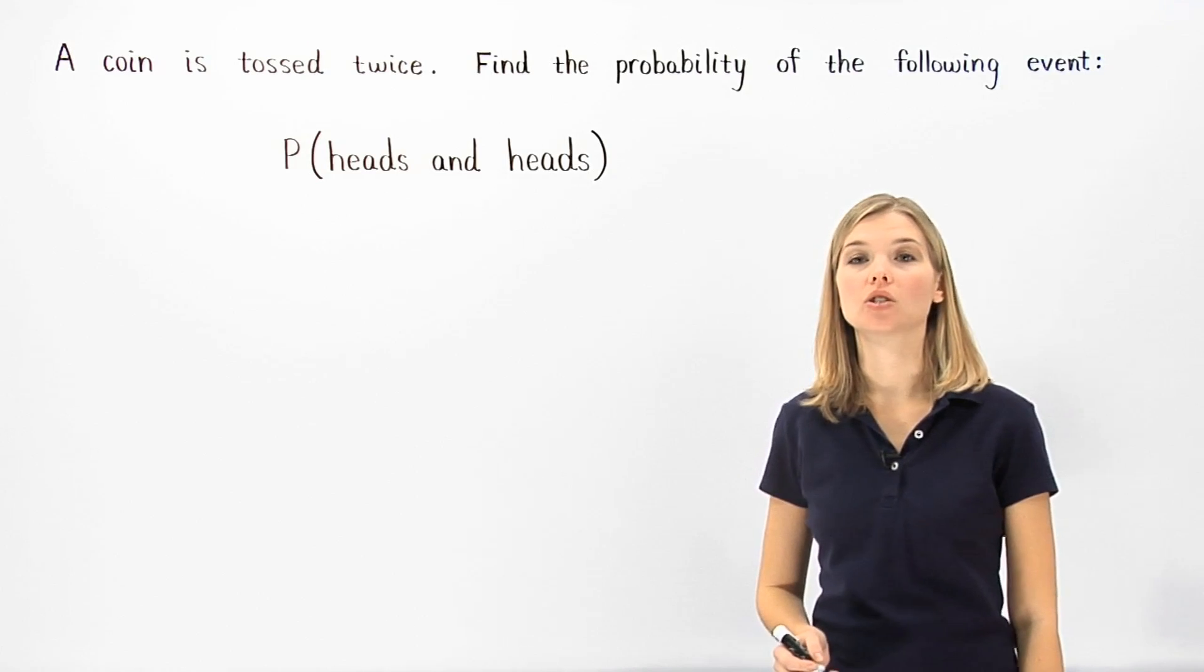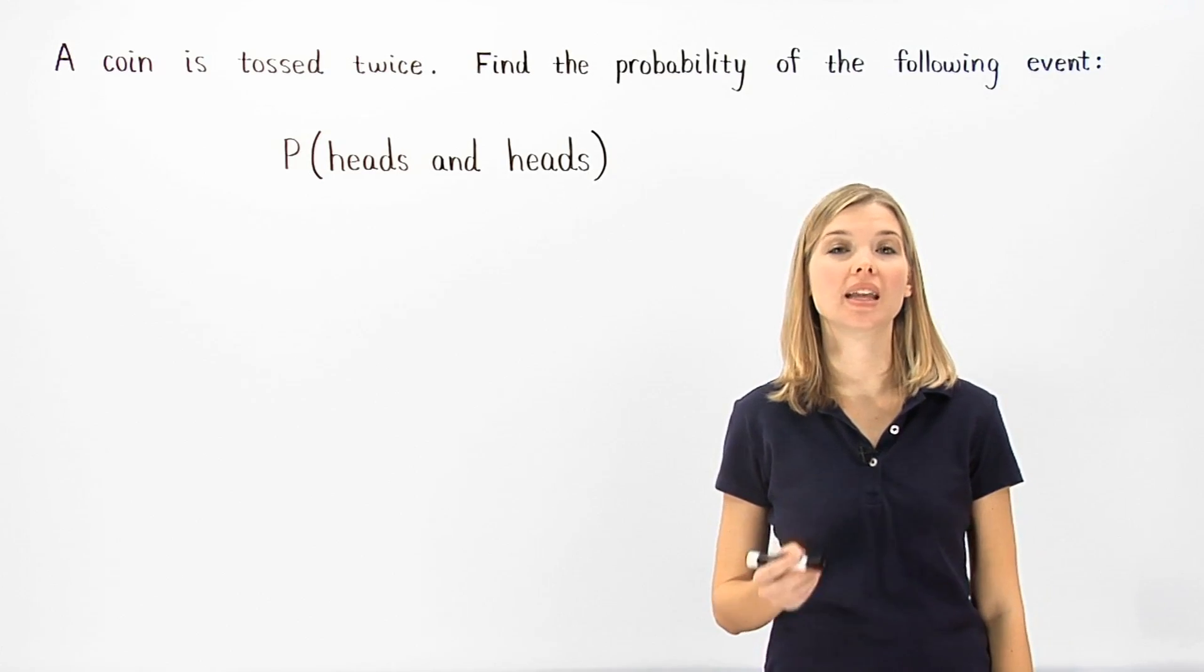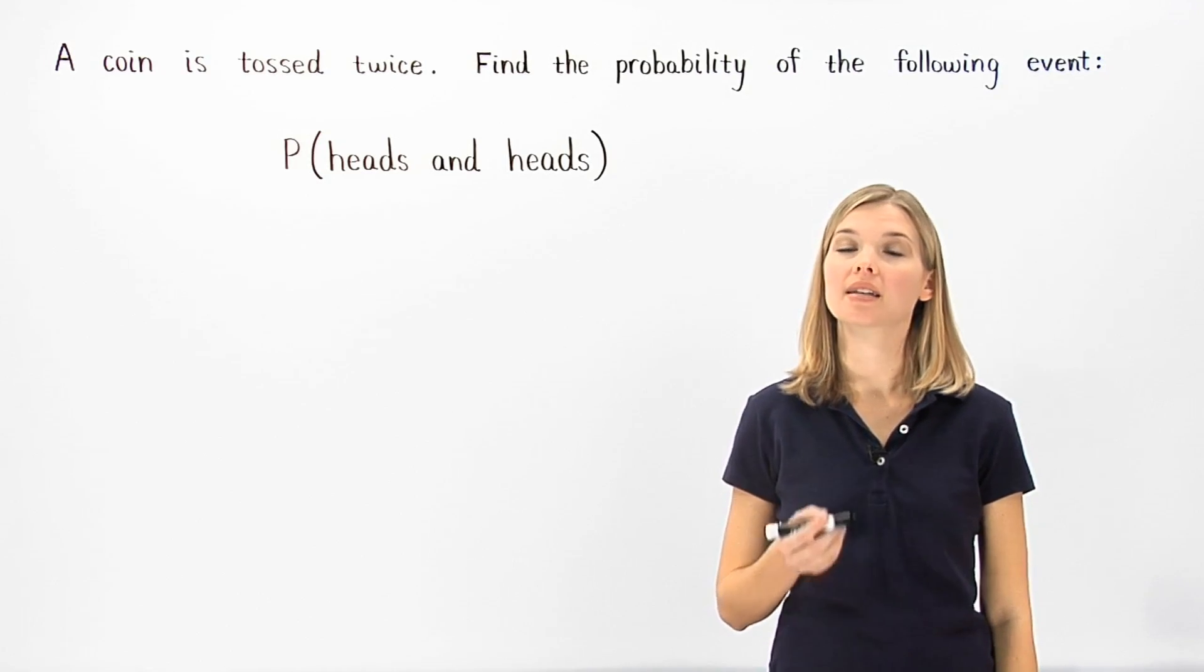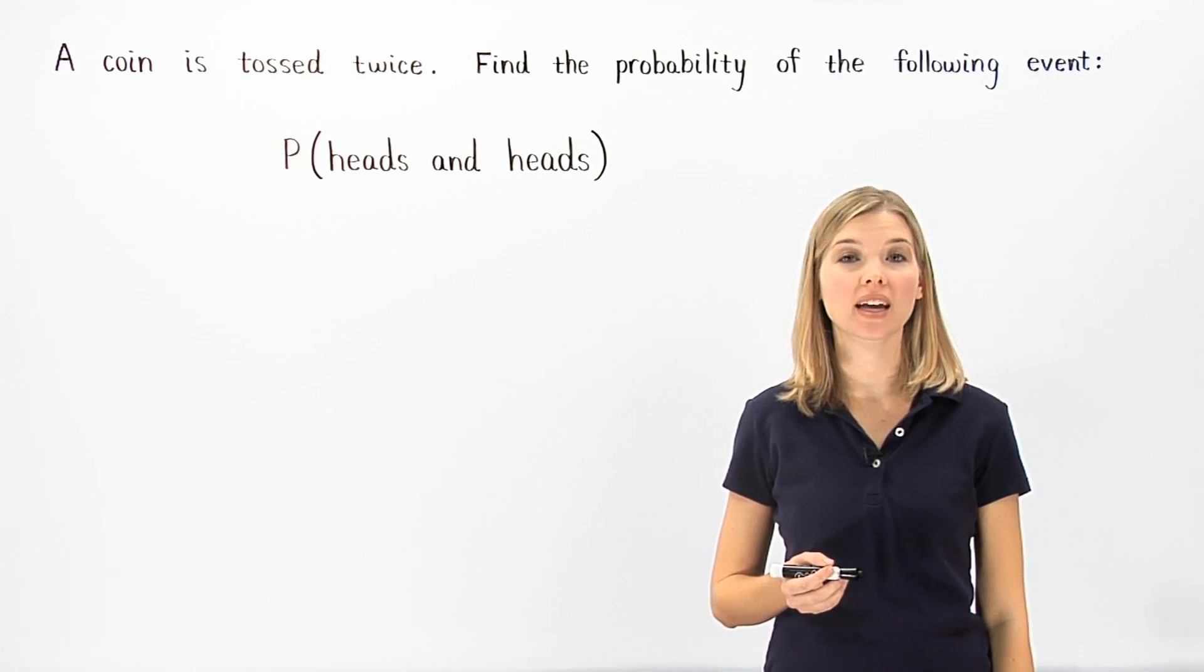It's important to understand that the two coin tosses are called independent events, because the outcome of the first coin toss does not affect the outcome of the second coin toss.